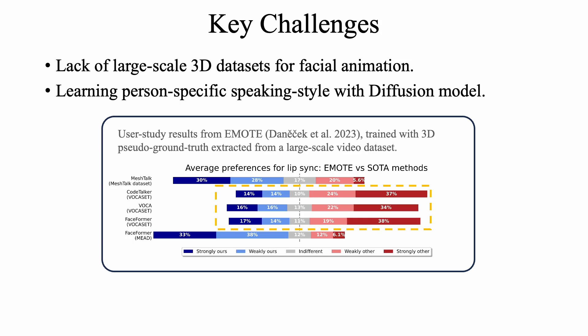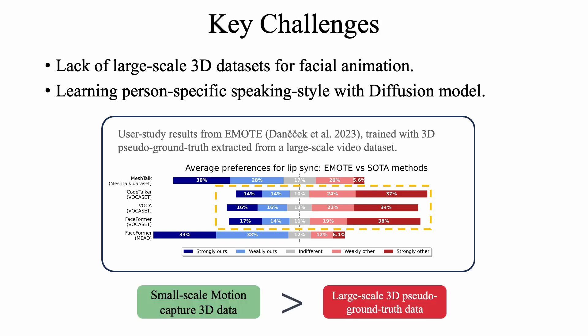To address the challenge of data limitation, methods like EMOTE trained with 3D pseudo-ground truth extracted from a large-scale video dataset, but the synthesis quality is limited by the underlying tracker used. From their user study, we can see that a method trained on a low-scale high-quality dataset outperforms them in lip sync. With this observation, we believe that for the 3D facial animation task, it is beneficial to train on high-quality 3D datasets over large low-quality datasets.